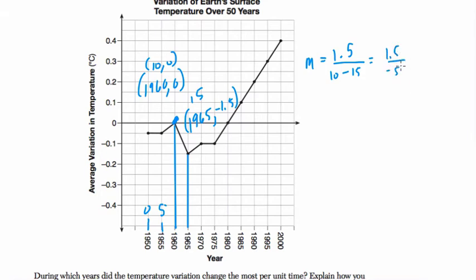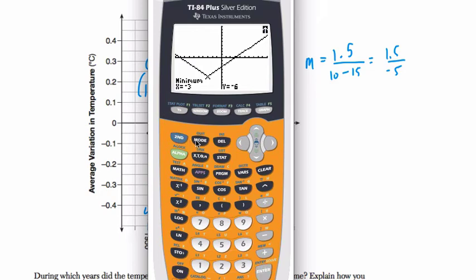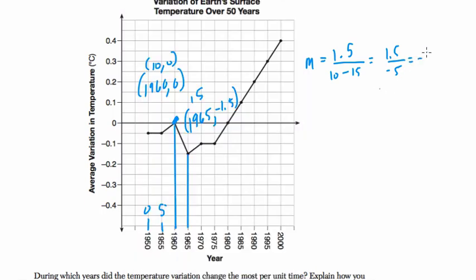And you have 1.5 over negative 5, right? And you can calculate this. So let's grab my calculator. So here, negative, oh, sorry. So it's 1.5 divided by negative 5 equals negative 0.3, right?